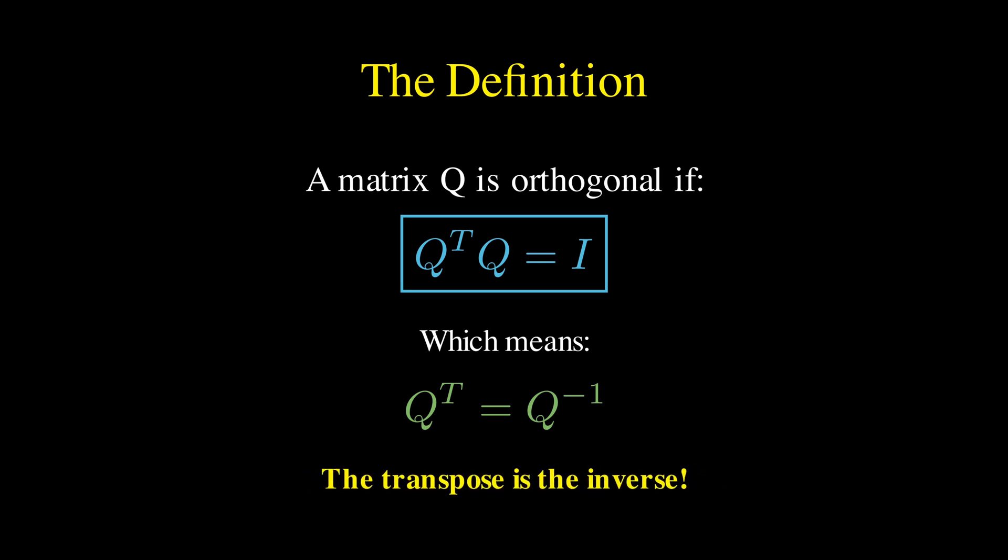This is remarkable, because computing a transpose is trivial—you just flip the matrix along its diagonal—whereas computing a matrix inverse is typically much more expensive and numerically tricky.